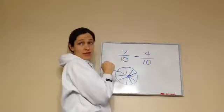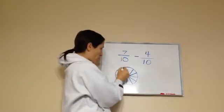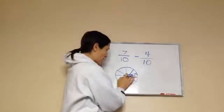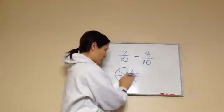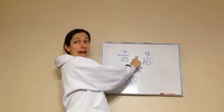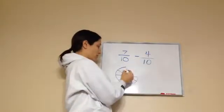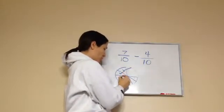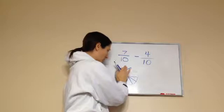So, if I have seven-tenths, all right? So, I'm going to go one, two, three, four, five, six, seven. So, I'm going to erase the rest of these because that's how much I have. Then, I'm going to take away four-tenths. So, I'm going to take away this one. One, two, three, four. So, I'm going to take those away.